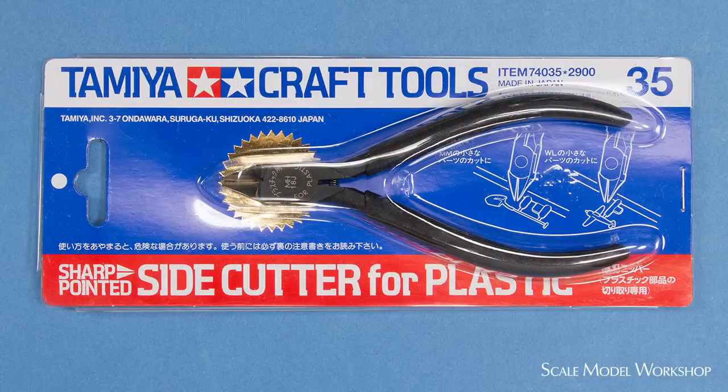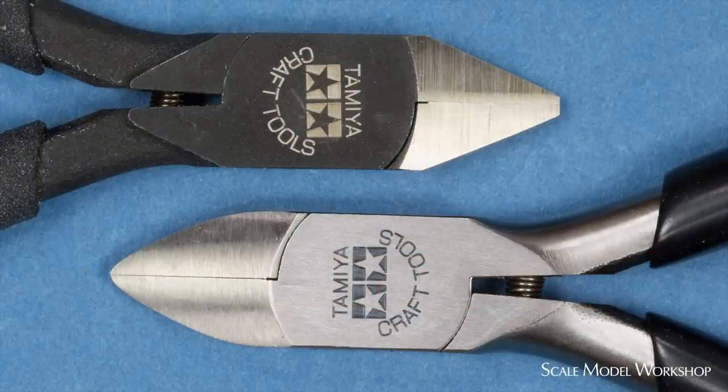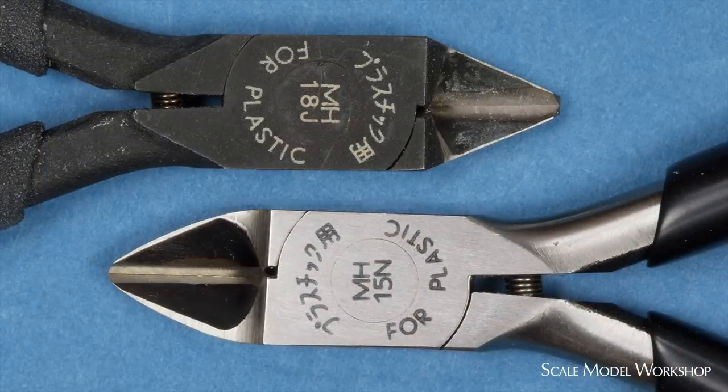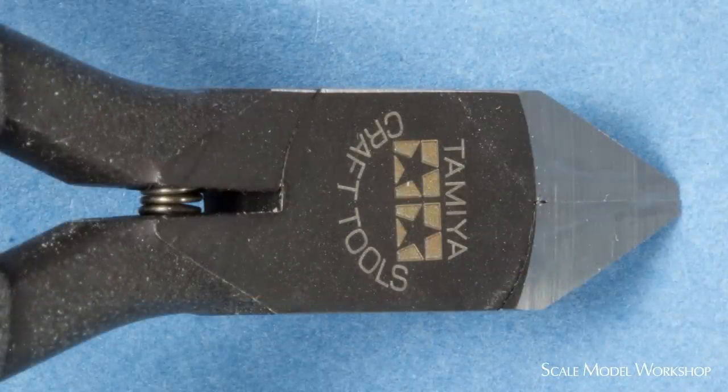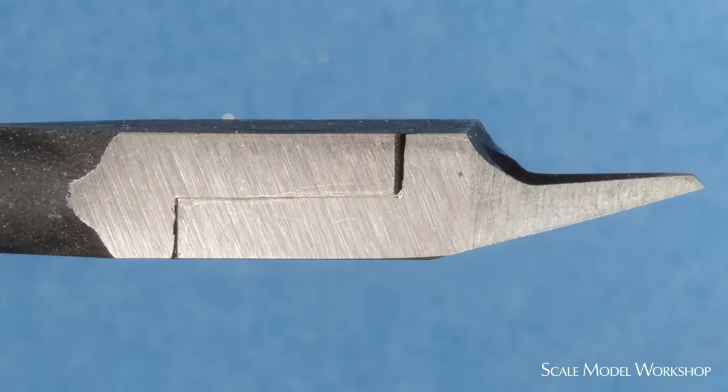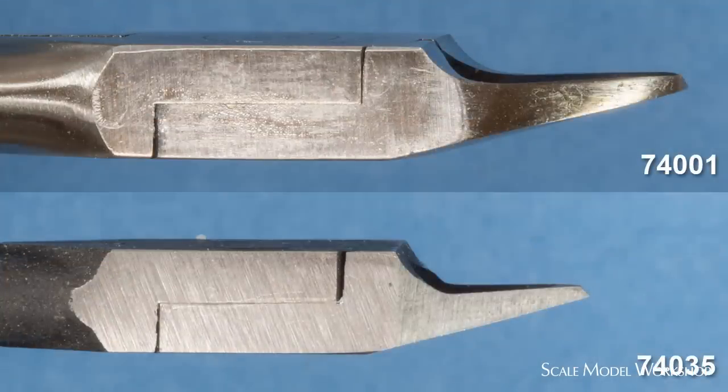The Tamiya 74035 is a bit smaller than the 74001, and the jaws are thinner with a straight taper to the tip. They curve from side to side, but are flat from top to bottom, and thinner than the 74001.